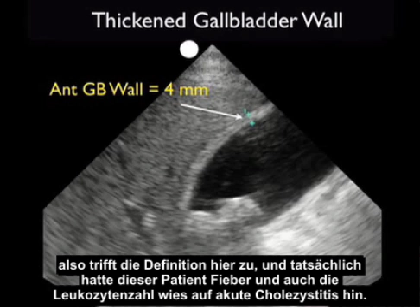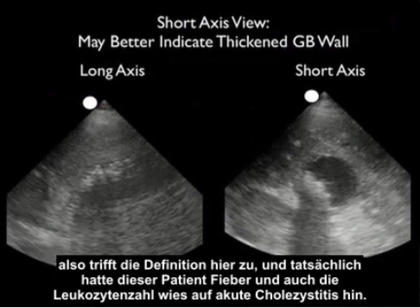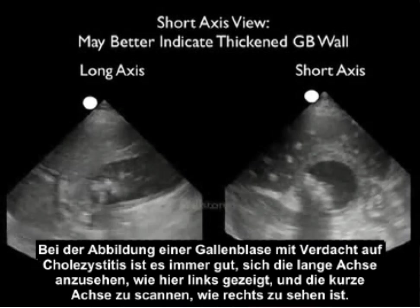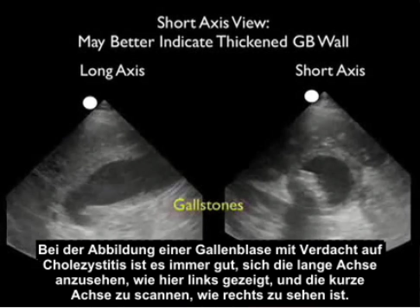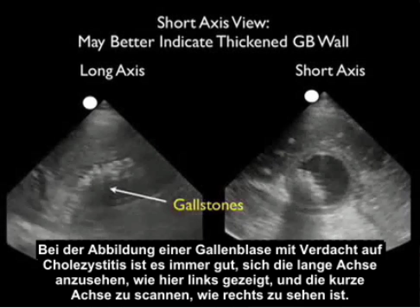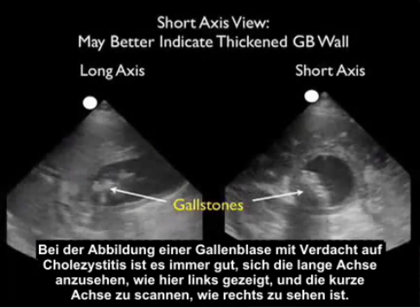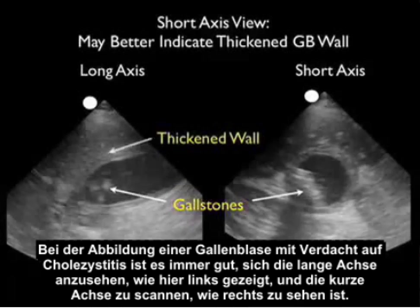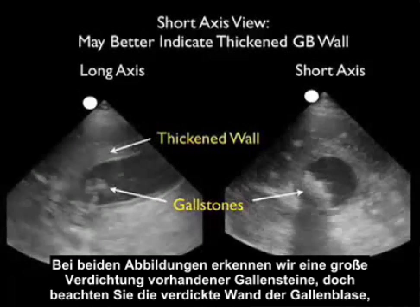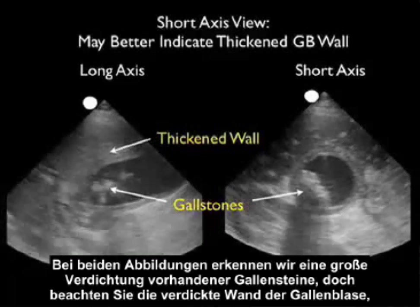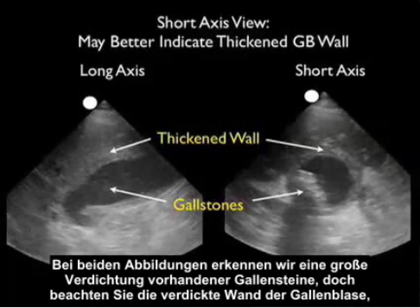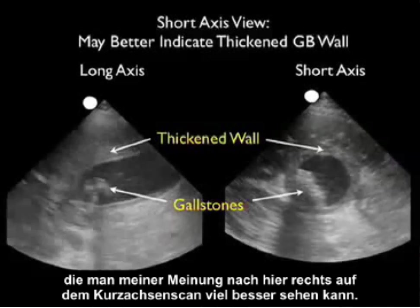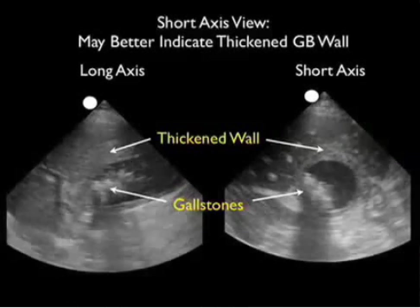In fact, this patient had a fever and a white count indicative of acute cholecystitis. When imaging a gallbladder with possible cholecystitis, it's always good to look in a long axis scan as shown here to the left and a short axis scan as seen to the right. In both of these images, we note a large concretion of gallstones present, but notice the thickened gallbladder wall that is much better seen here on the short axis scan to the right side.